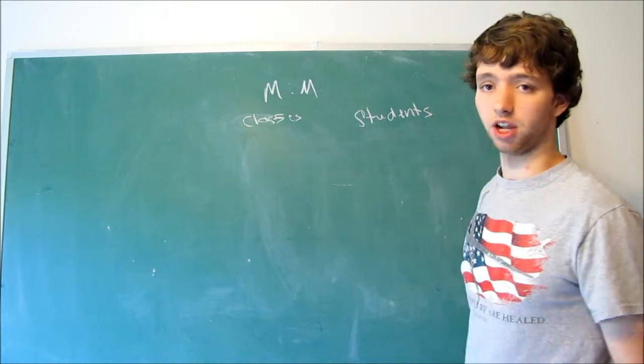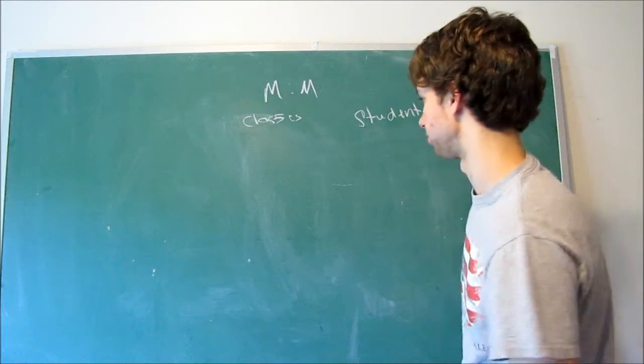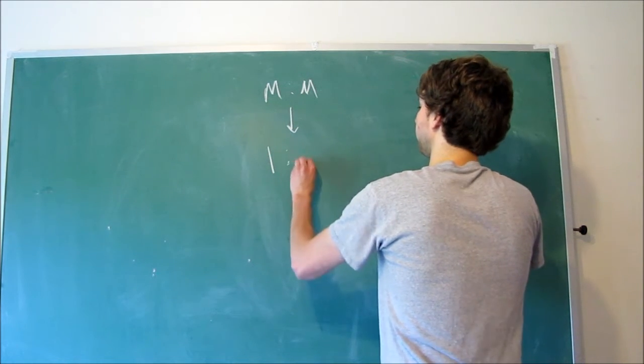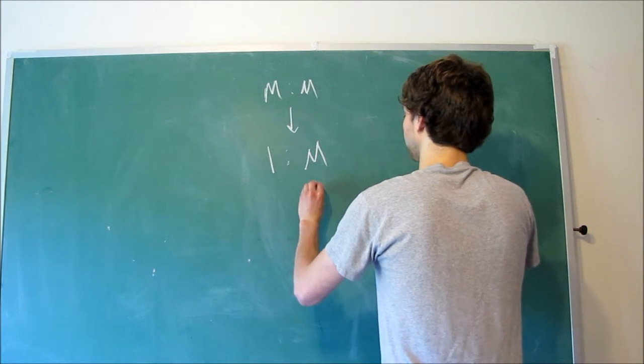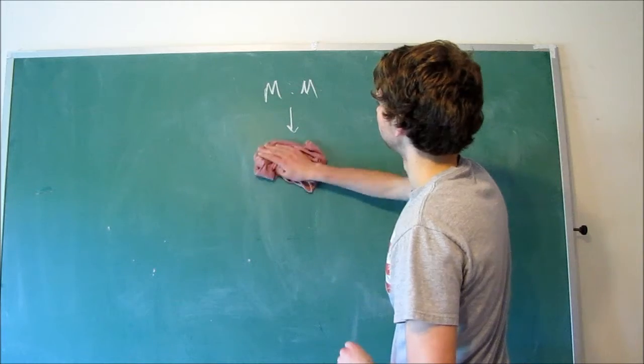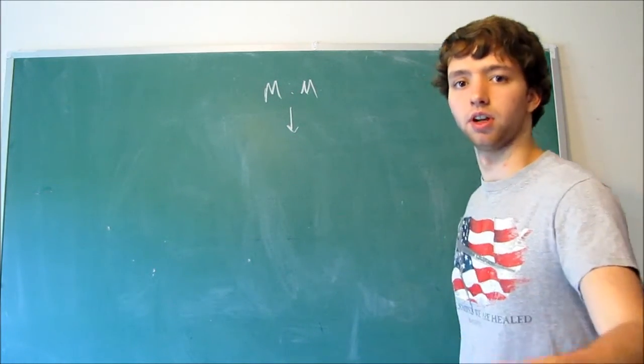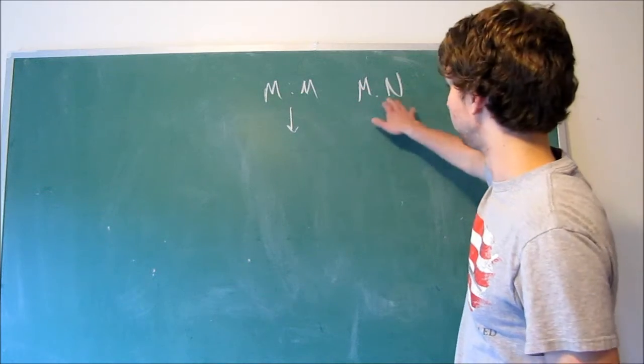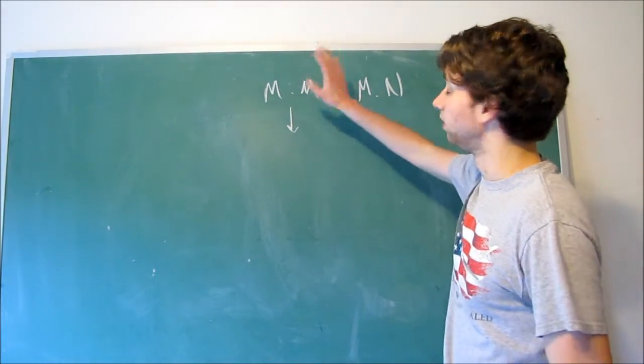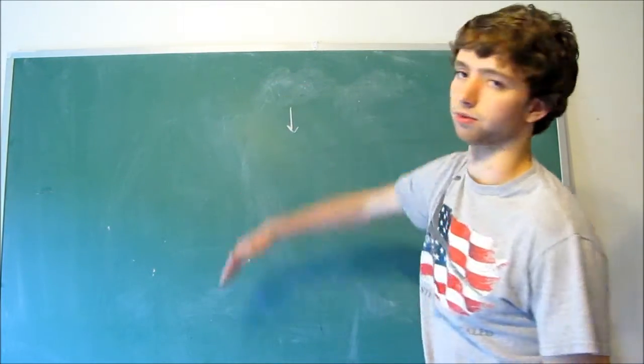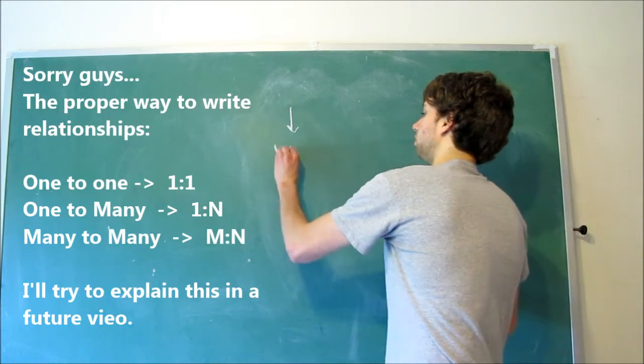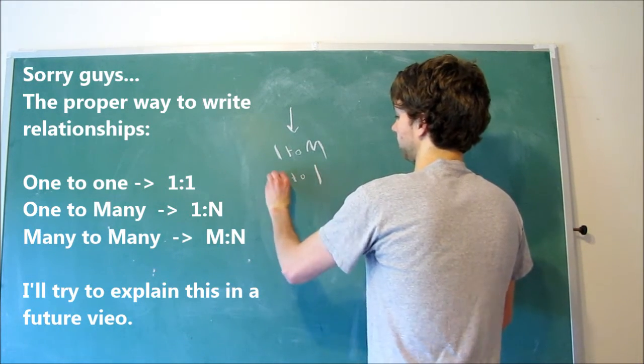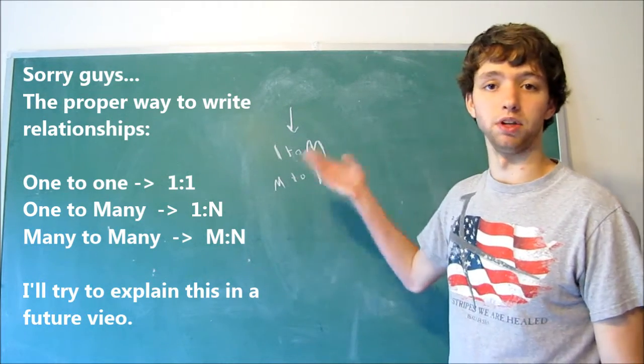The way we do this is we break it up into two one-to-many relationships. So this many-to-many is going to become a one-to-many, and then a second. Just for you guys' information, these colon things, I think the correct way to do that is many-to-n, but just don't worry about that. We'll talk about that in upcoming videos. So we're going to break this up into one-to-many, and then another one-to-many, but the other way. That is how we fix that problem.